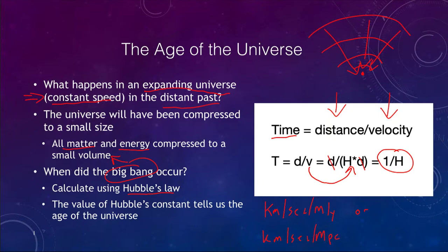There are some conversions that have to go through because we measure Hubble's constant in kilometers per second per megaparsec, or million parsecs. The units have to be converted to actually get the age of the universe.